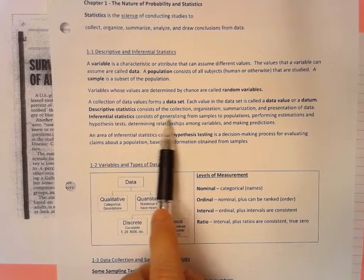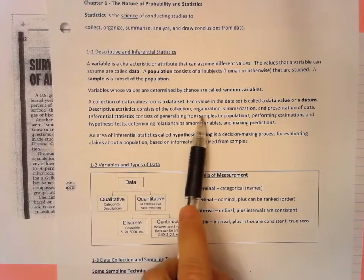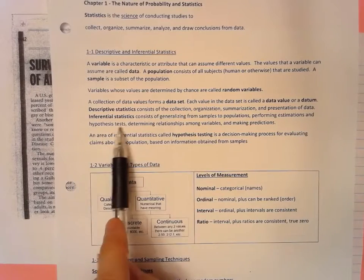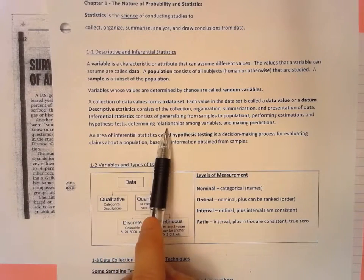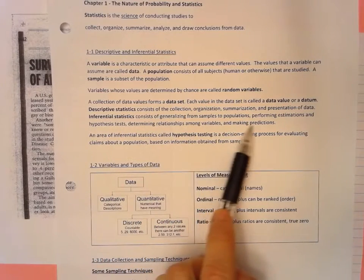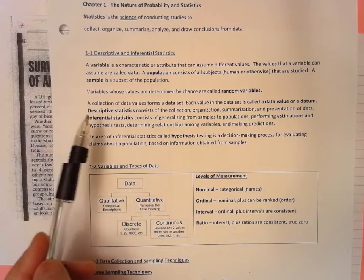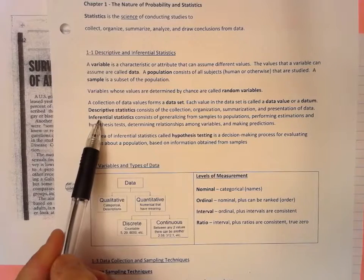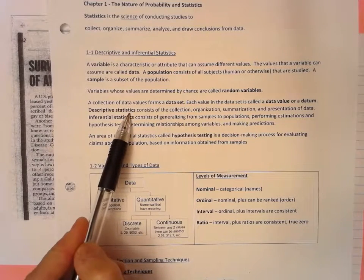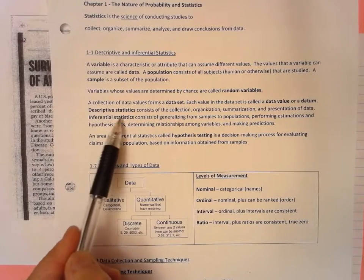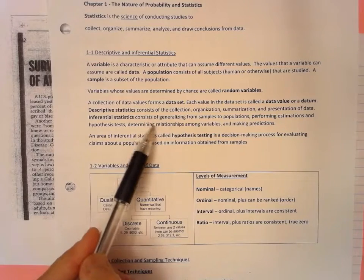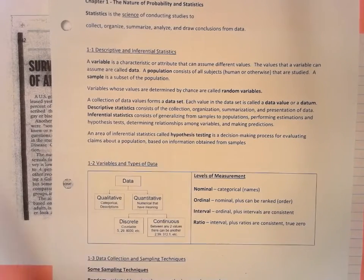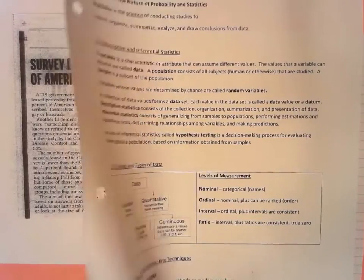Inferential statistics consists of generalizing from samples to populations, performing estimations and hypothesis tests, determining relationships among variables, and making predictions. So basically, descriptive is just describing what's in the sample or describing the entire population, and inferential statistics is taking a sample and inferring to the entire population.